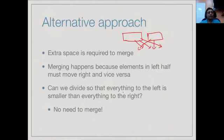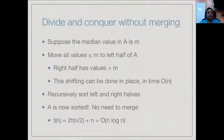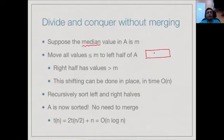Can we divide everything so that this does not happen — everything on the left is smaller and everything on the right is larger? Is it possible to do a divide-and-conquer in this fashion? If so, we need to put the middle value in the center. Suppose we can find the median — the value such that exactly half the values in the array are bigger and half are smaller. We move everything smaller than m to the left half, giving us values less than or equal to m on the left, and strictly greater than m on the right.